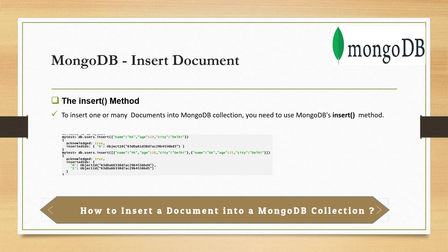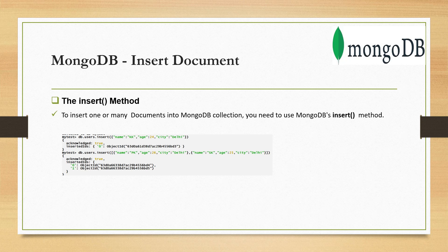The first method I would like to talk about is the insert method, used to insert one or many documents into a MongoDB collection. You need to connect to the database, specify the collection name, then use insert and pass either a single JSON object or multiple JSON objects. If you insert a single JSON object, once the data is inserted successfully it will return acknowledged true and inserted IDs. As we inserted only one object in the first case, it returned an object ID at index zero.